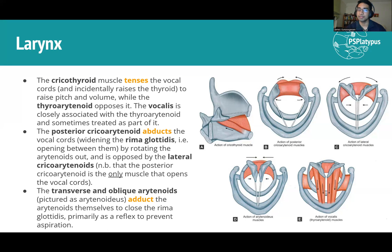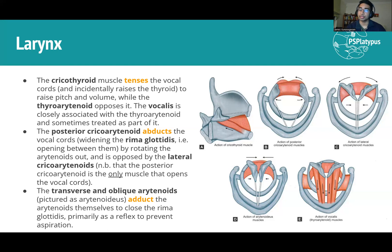There's a small space remaining at the back, and what fully closes that off is the transverse and oblique arytenoids. These are your reflex muscles when something goes down the wrong pipe — if the epiglottis or other muscles fail, these muscles slam it shut to stop food or water going down the trachea. They're pretty important.